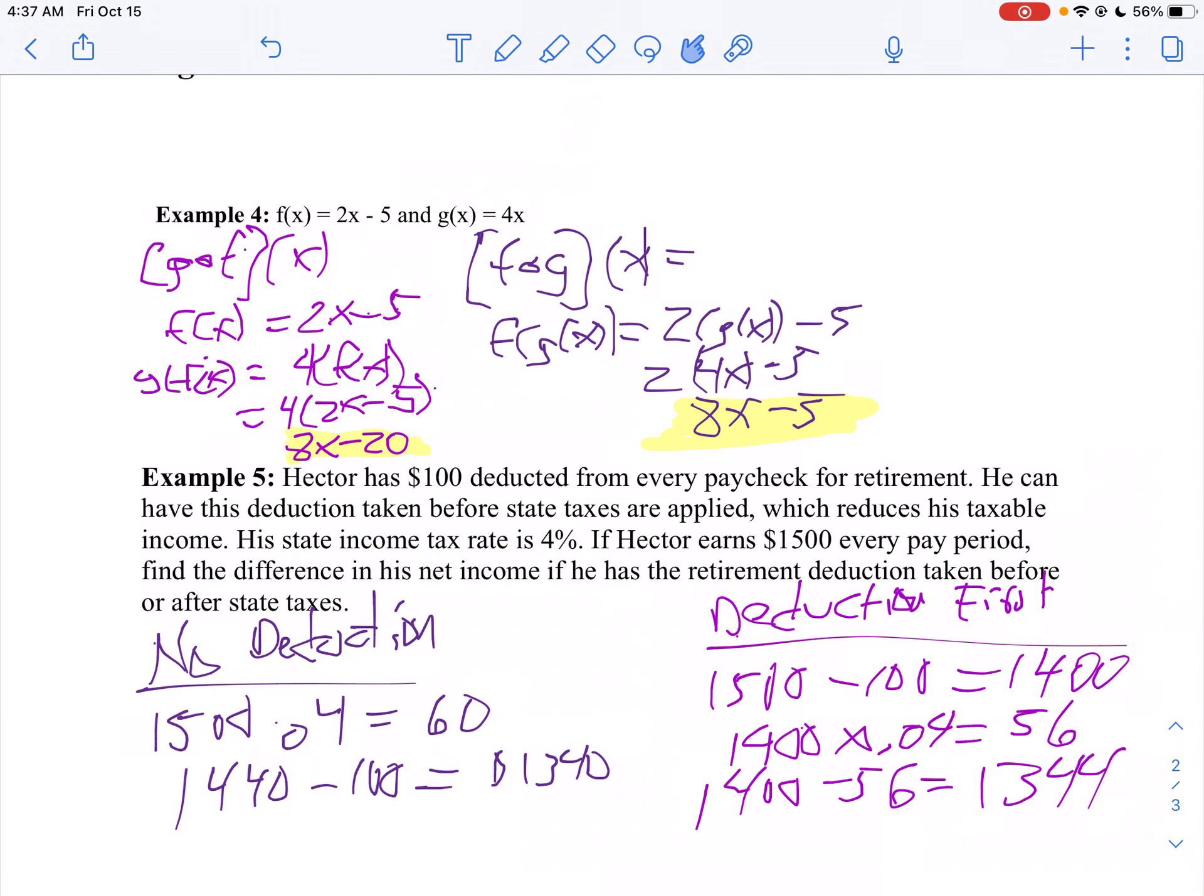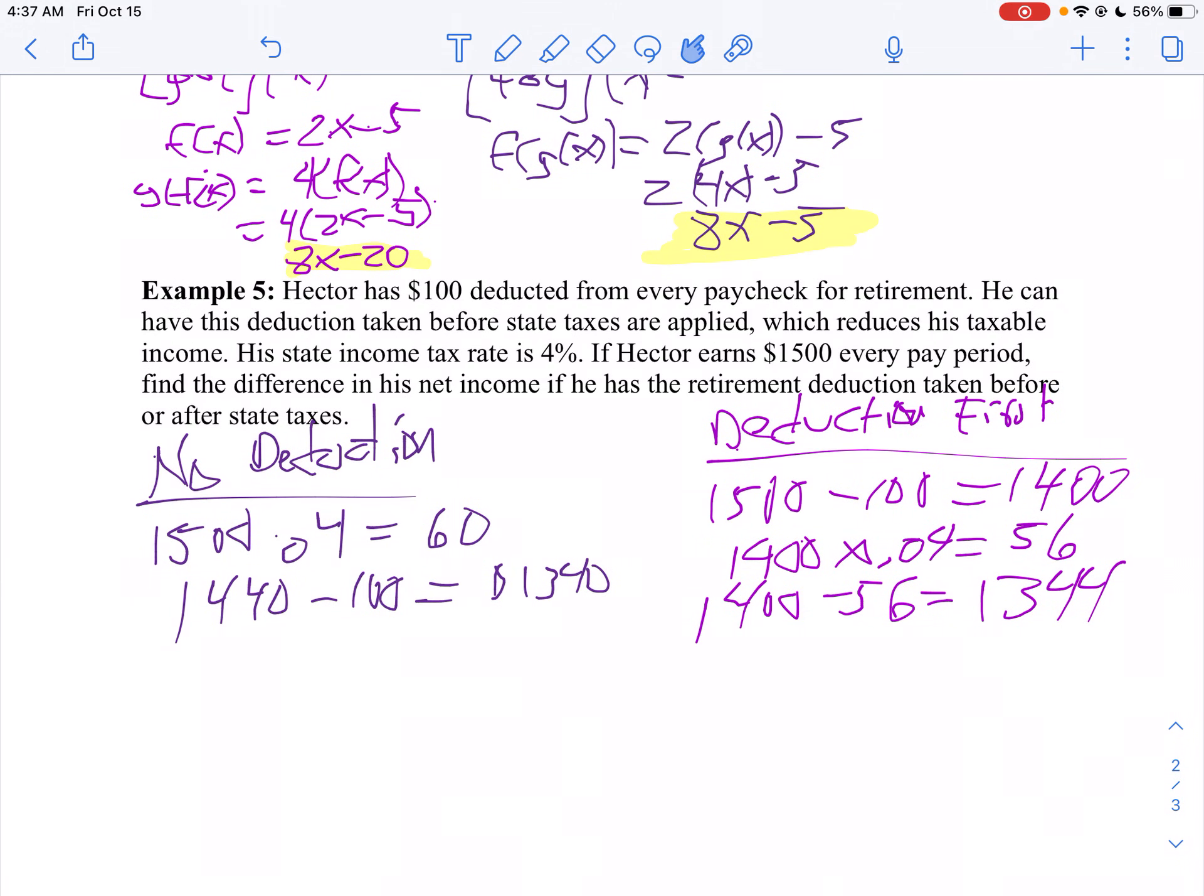So if he has his deduction taken out first, he gets to take home $4 more dollars. That's a pretty good deal, especially if you can do it every pay period. You get a free coffee every pay period.